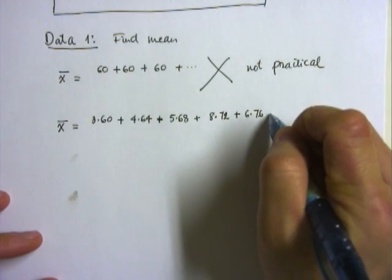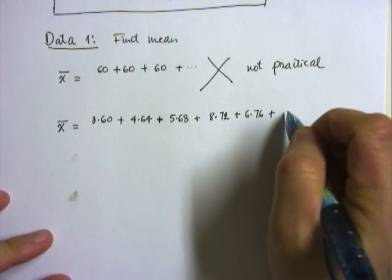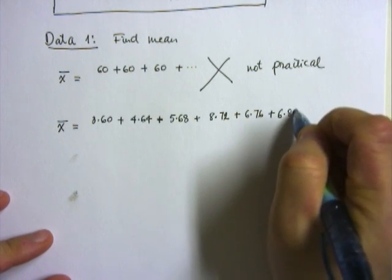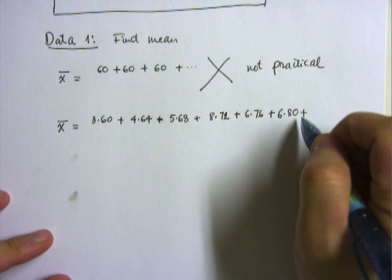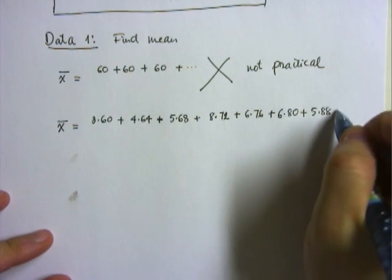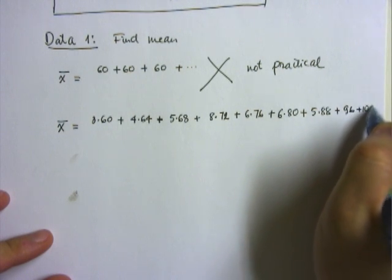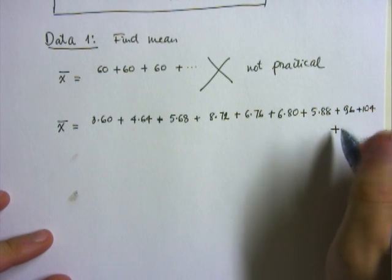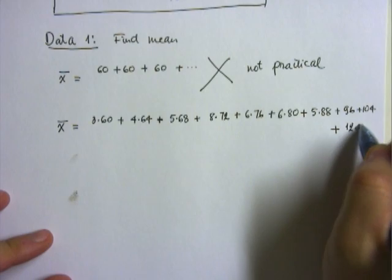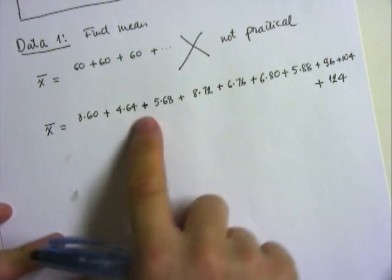So now continuing on my list, I have 80 multiplied by 6 again, 6 times 80. Next I have 5 times 88. And then after that I have 96 just one time, I have 104 just one time. And now I'm running a little out of space here, so allow me to jump down to my next line, plus 124, which is my very last item on the list.